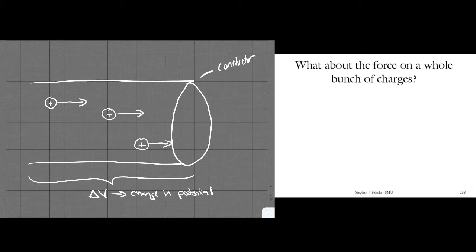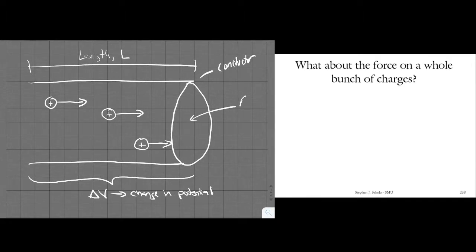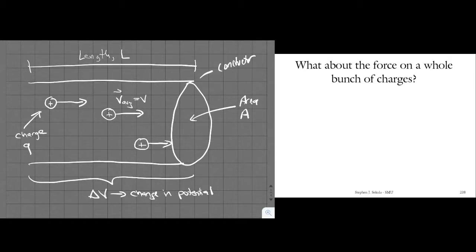The conductor has a length L and an area A. The charge — we'll call it little q — has an average velocity that is the drift velocity, v-drift.